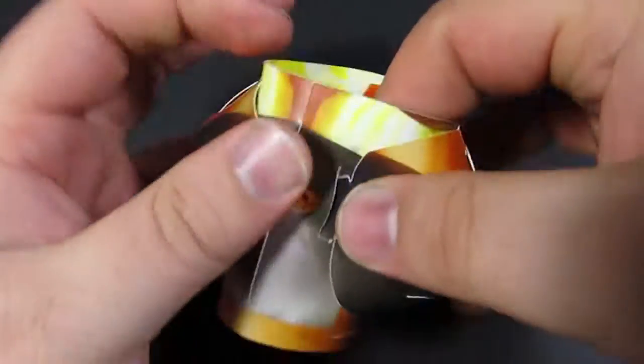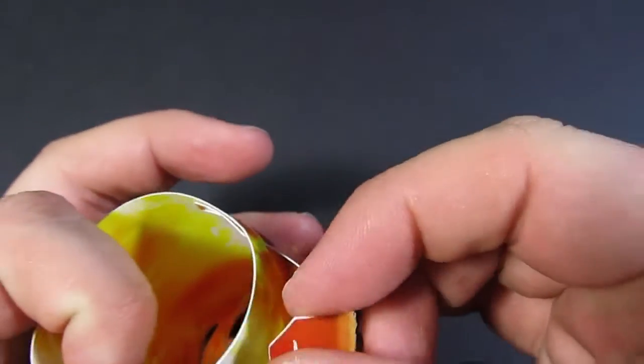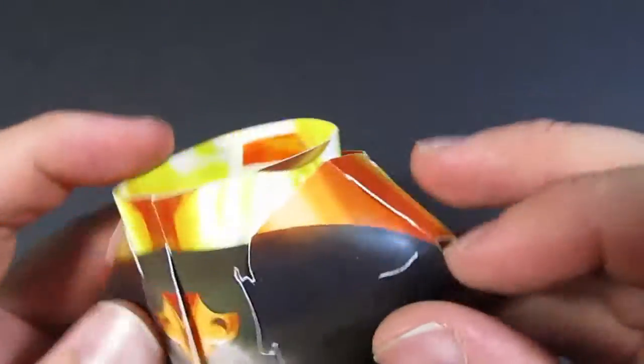Then you have this tab here, again directional. It may take a little bit of work, but you will get the tab in there. If that pops open, just put it back and there we have the body assembled.